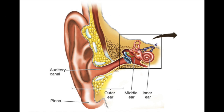The ear is divided into three areas: the outer, middle, and inner ear. The visible portion of the ear consists primarily of cartilage covered by skin, forming a sort of funnel called the pinna. The pinna catches sound waves and passes them along deeper into the ear.